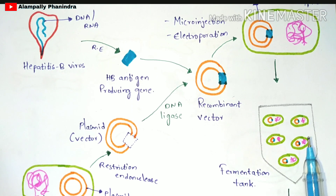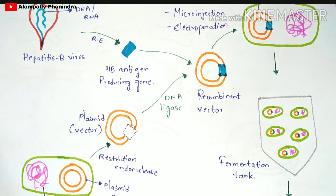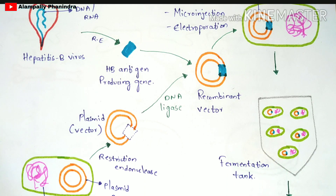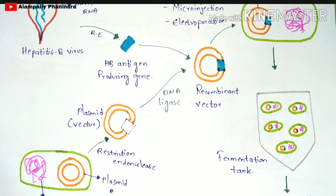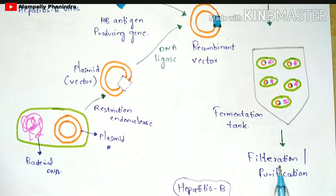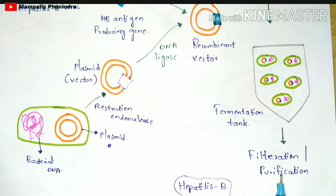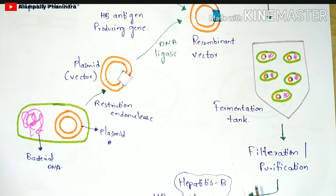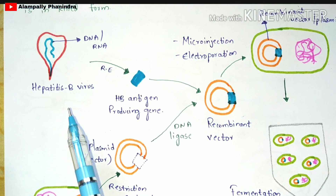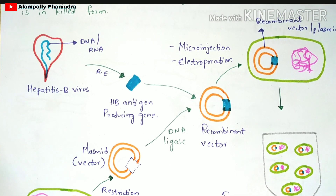Open the tap of the fermentation tank so all the mixture is collected. Then filter the mixture and perform purification. After purification, you obtain the hepatitis B vaccine, also called the HB vaccine. This is the method of vaccine production. The HB vaccine is produced because the virus chosen was hepatitis B virus.